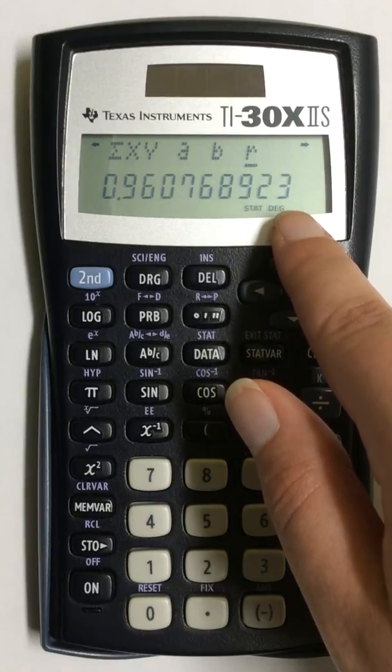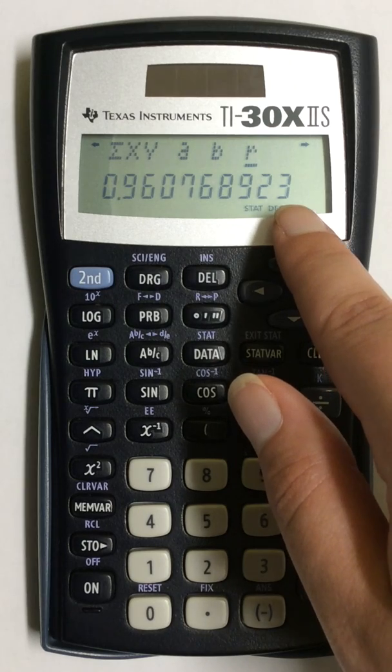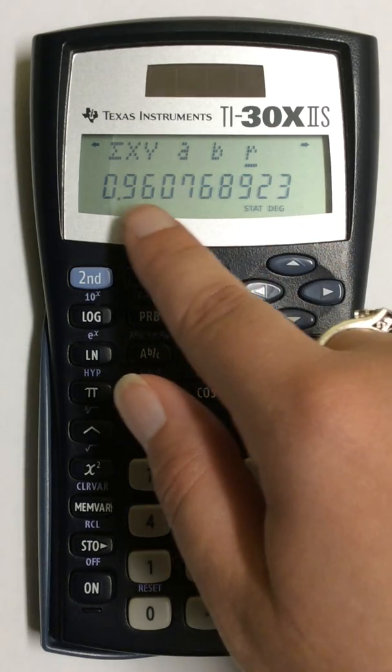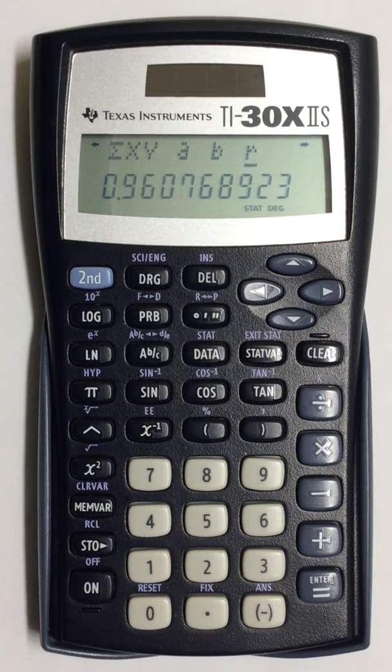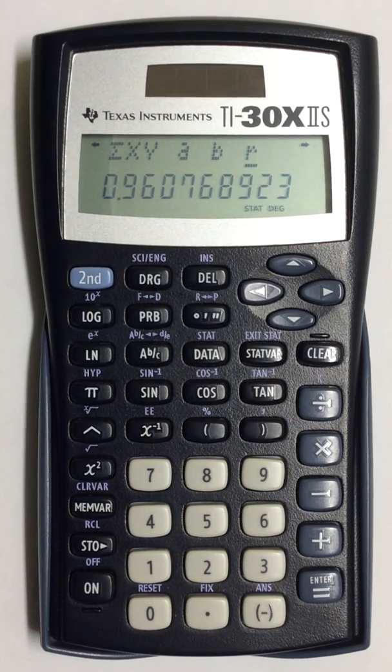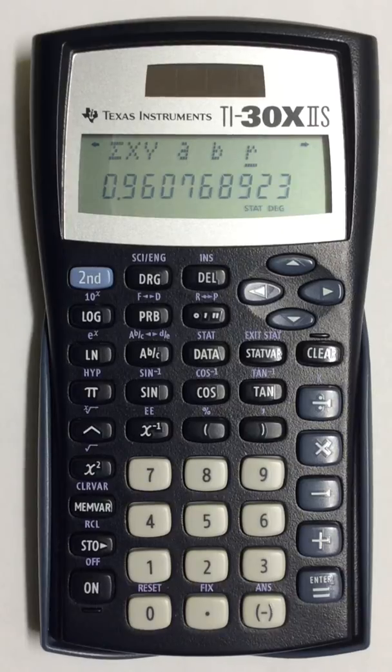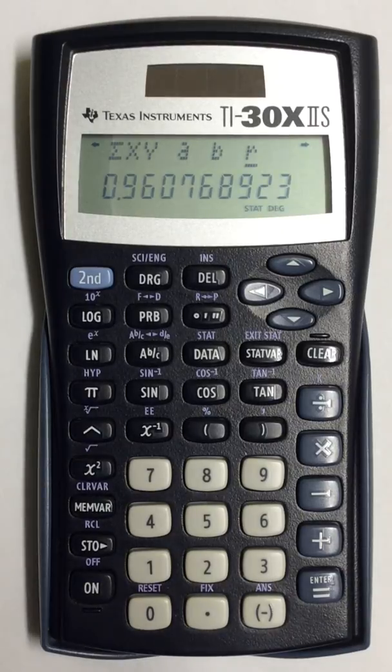There's no extra work to do. As long as it's underlined, this is the value that I will take. This is how to find correlation coefficient in a scientific calculator. Thank you.